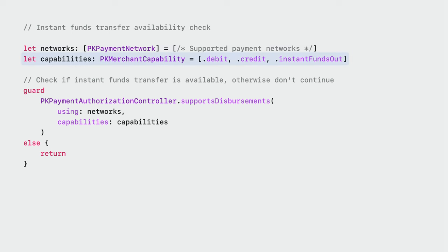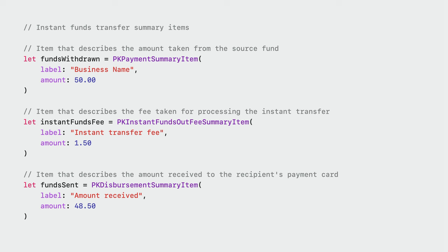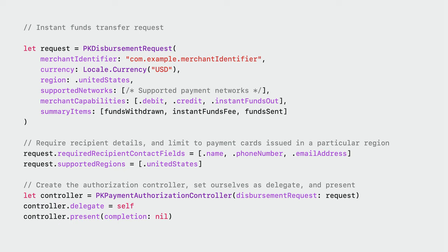Let's see how to make the previous transfer request an instant one. First, we add instantFundsOut to our list of supported capabilities. We can then check within supportsDisbursements whether the user has any cards that support instant transfers and adjust your user interface accordingly. For summary items, we have a dedicated item to represent instant transfer fees: PKInstantFundsOutFeeSummaryItem. With this item, you specify the amount that will be charged for the purposes of performing an instant transfer. Even if you don't charge a fee, this summary item is still required — in that case, set an amount of zero. Because in this example we are charging a fee, we need to update the disbursement amount accordingly; this won't be done automatically for you. Creating the PKDisbursementRequest isn't too different from before — just ensure you provide the updated capabilities and summary items.